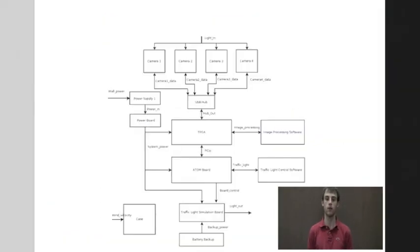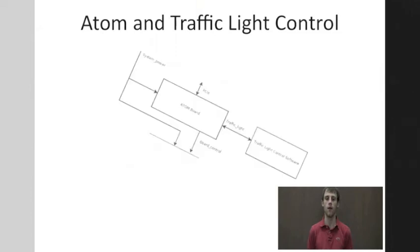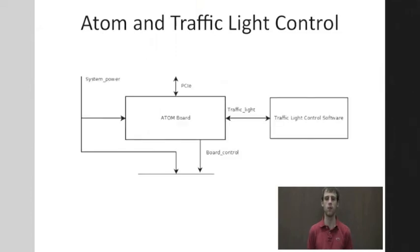Next, we will take a look at the atom and how it controls the traffic lights. The atom will receive pixel coordinates and the number of the cars per each direction from the FPGA and send an interrupt to the traffic light simulation boards indicating that the light should change. This data will then be used to calculate when each car will arrive at the intersection, openly deciding when to change the light and flow with traffic.